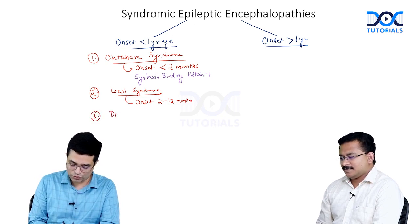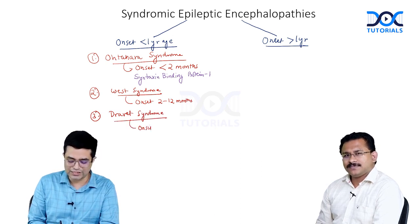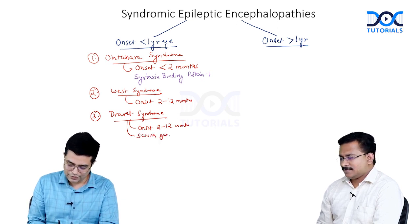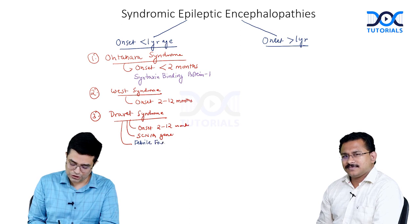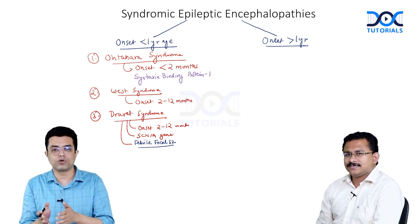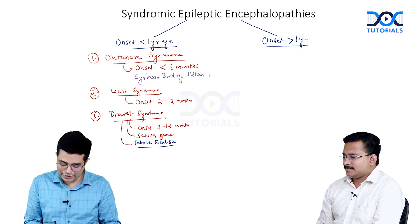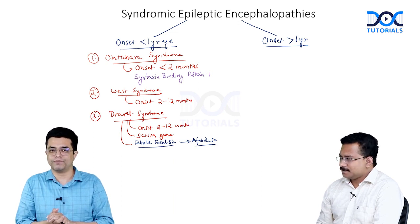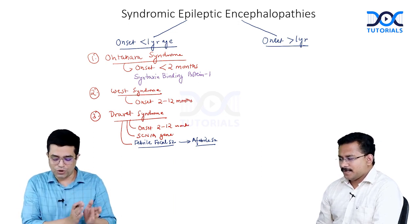The third syndrome is Dravet syndrome. The time of onset is similar to West syndrome — about 2 to 12 months. These patients have an SCN1A gene mutation. Dravet syndrome is associated with febrile focal seizures: it begins as febrile seizures with early onset, difficult to control, more prolonged, beginning as focal seizures, then evolving into afebrile seizures as well, with multiple seizure types developing. After one year of age, Dravet syndrome can develop myoclonic seizures also.